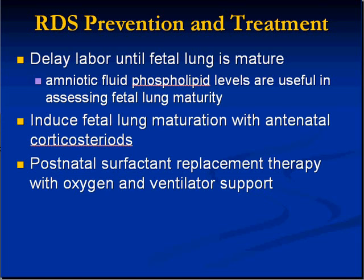If there is a consideration to do a C-section earlier rather than later, one of the big concerns going against earlier delivery is the fear that there may be inadequate surfactant. There are tests you can do on amniotic fluid — easy tests involving shake and bake, as well as specific chemistry levels for phospholipid — which will give you a very good idea of whether the lung is going to be mature when you deliver the baby. Steroids help with fetal lung maturation, so antenatal steroids have been used as well.